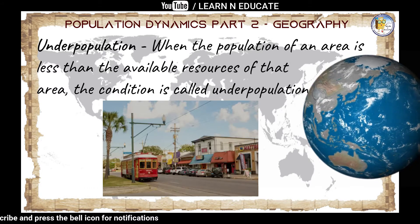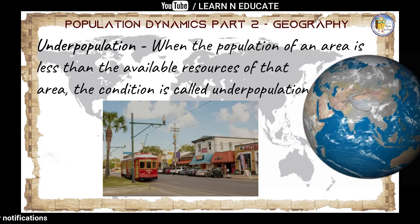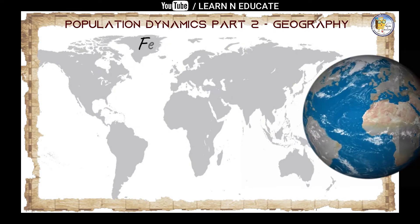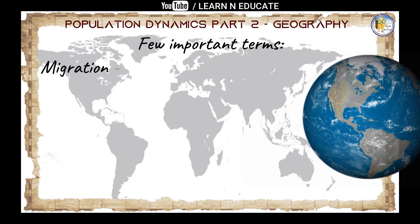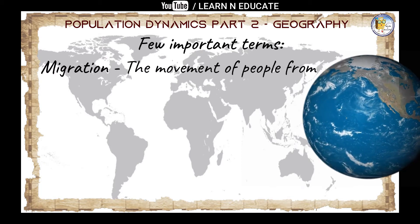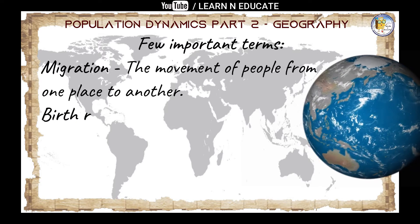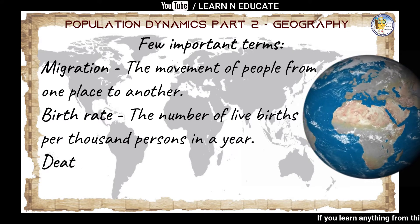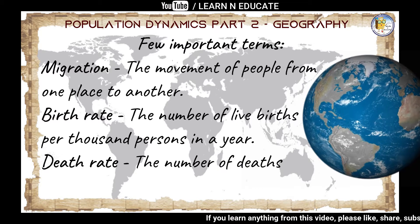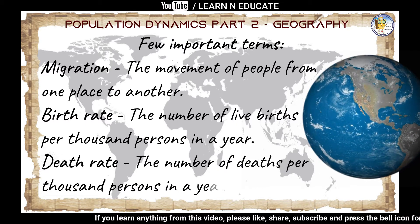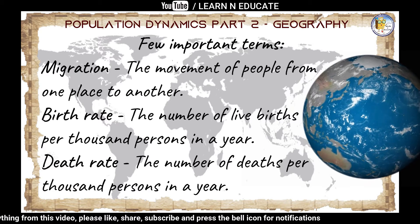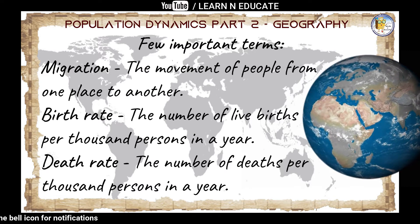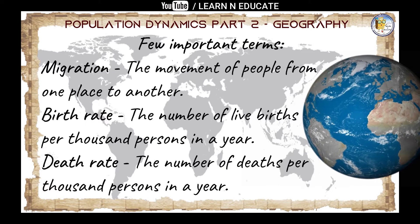More population means overpopulation, and less population means underpopulation. Before we move towards the causes, there are a few important terms to cover. We have already learned about migration — the movement of people from one place to another. Birth rate means the number of live births per thousand persons in a year, that is the number of babies born in a particular place during a particular time.